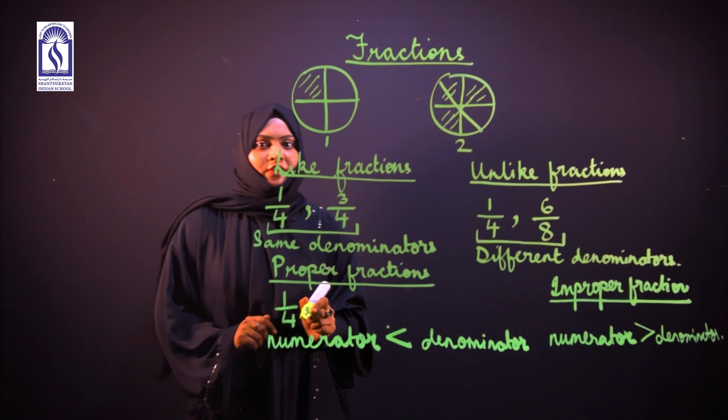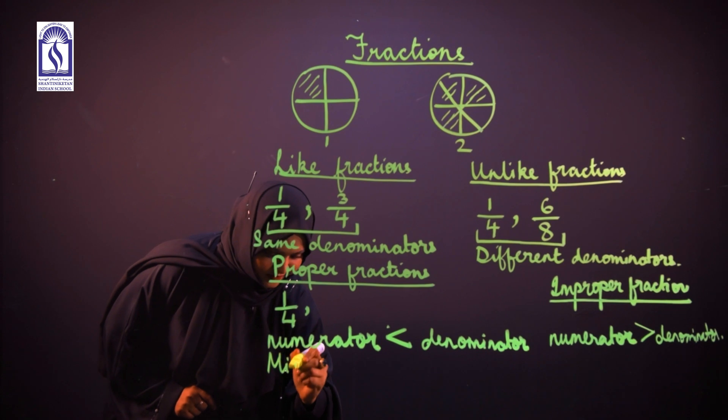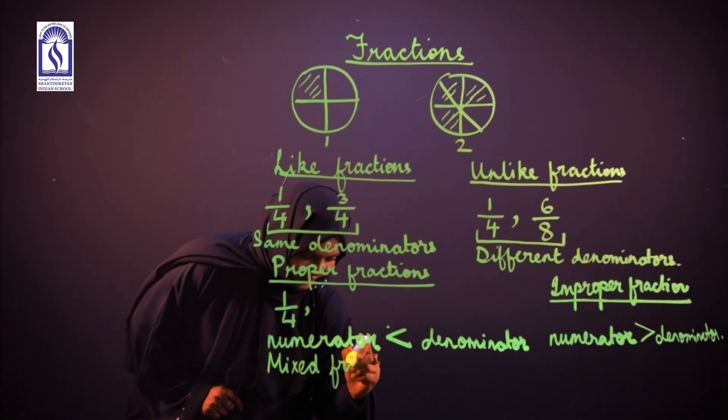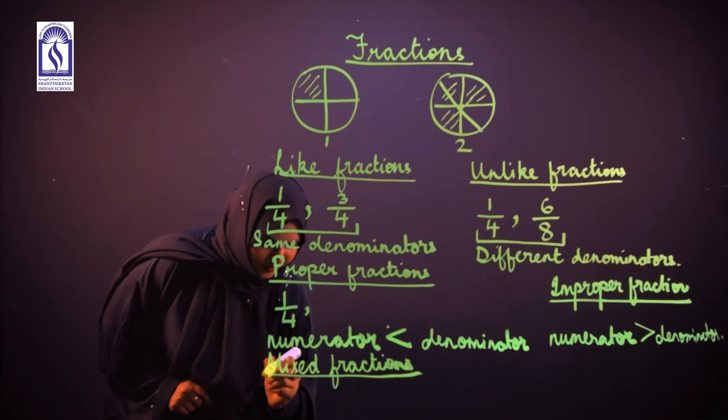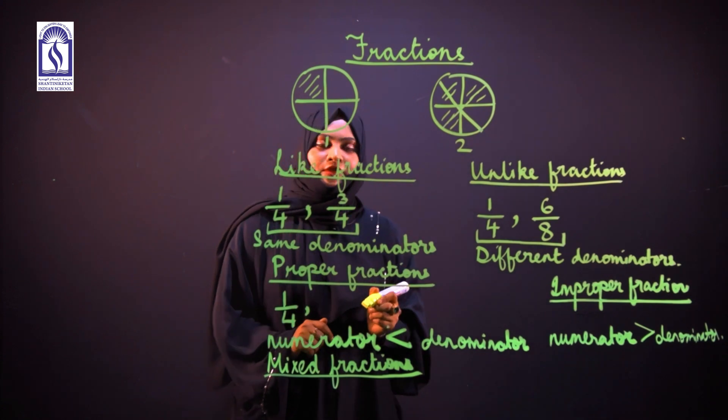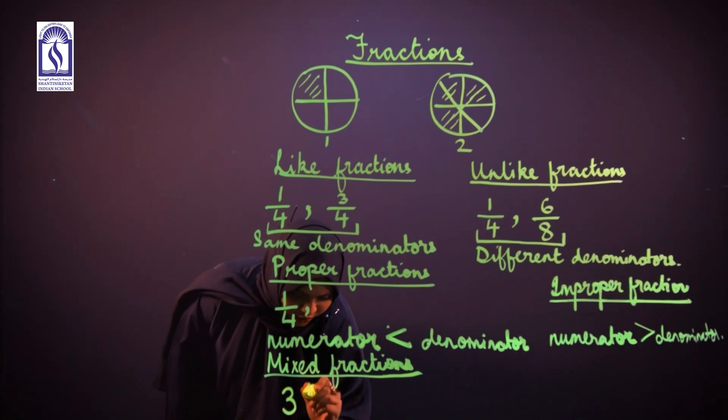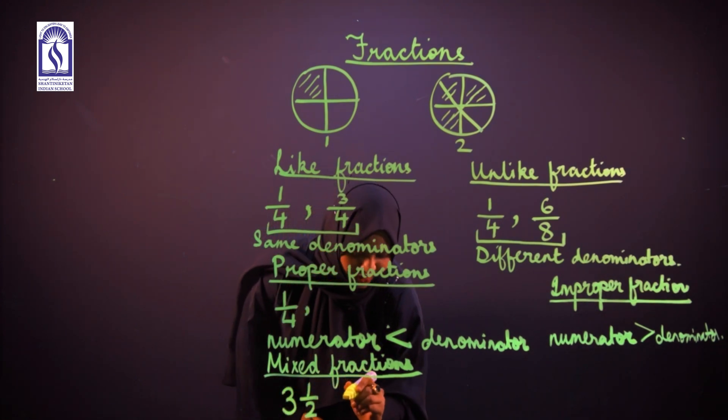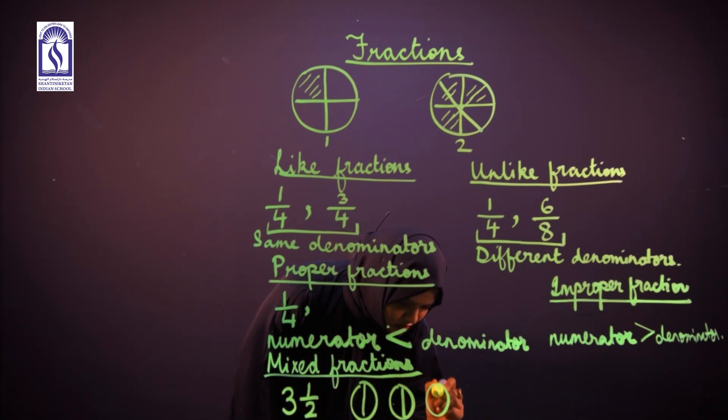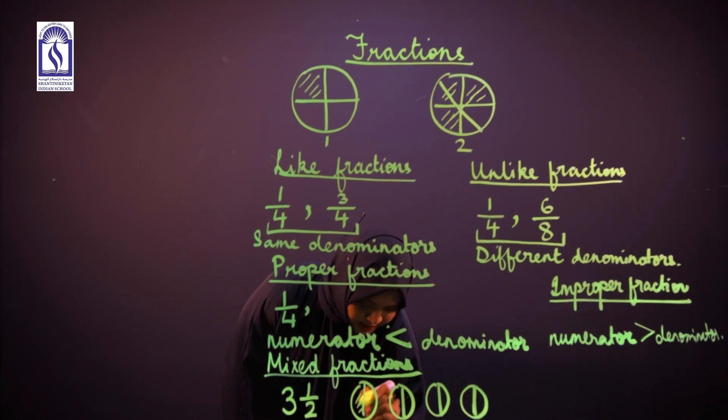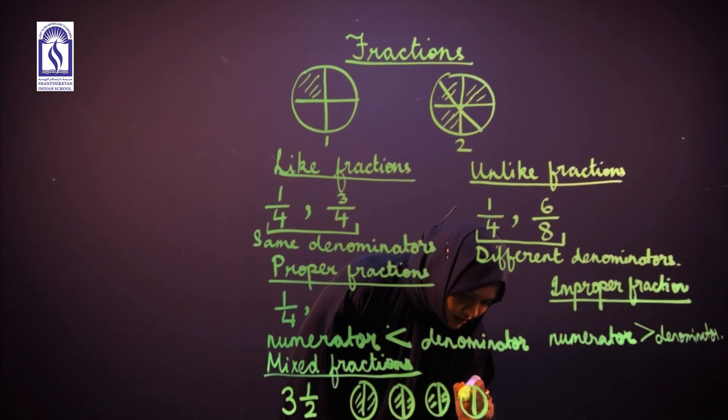The other type of fraction is mixed fractions. A mixed fraction is a set of fractions in which we have a whole number, like 3 1/2. By this we mean we have 3 whole sets and half of the 4th one.